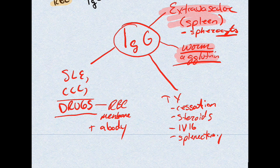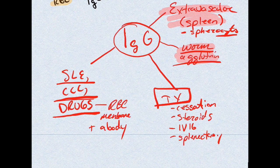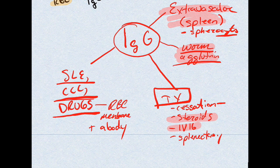IgG immune hemolytic anemia can be caused by autoimmune conditions like lupus, by chronic lymphocytic leukemia, or by drugs — where drugs bind to the red blood cell membrane and the body creates antibodies targeting the drug, but damages the RBC in the process. For treatment: if drug-related, stop the drug. If immune mediated, give steroids. IV Ig can also be used — it acts as a decoy for the spleen, distracting it from attacking the body's red blood cells. As a last resort, splenectomy is an option.